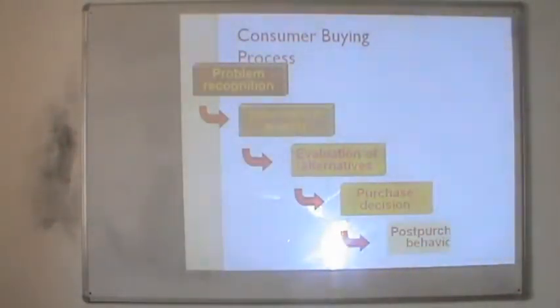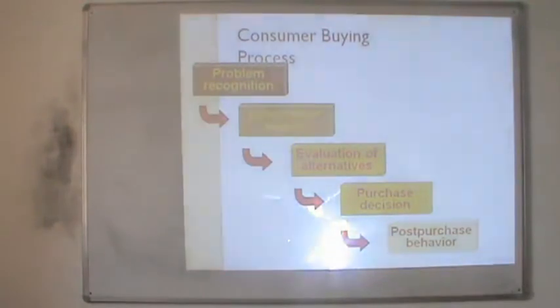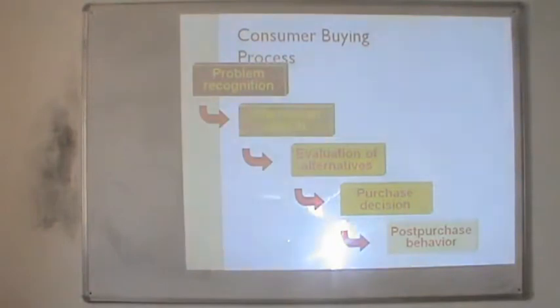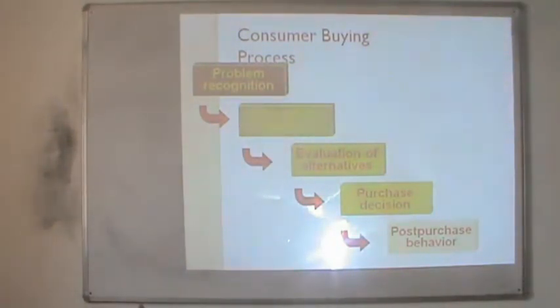Discussing the stages of consumer buying behavior: the first stage is problem recognition, where the consumer identifies an unfulfilled need and needs something to reduce the state of tension. In search of a solution, they go into the market to collect information. Sources of information can be friends, relatives, internet, commercial sources or magazines — anywhere from where they can get information to satisfy their need.